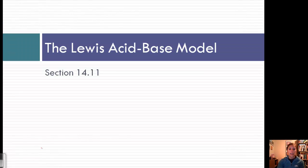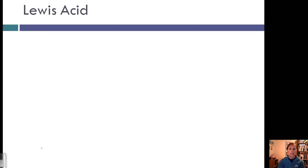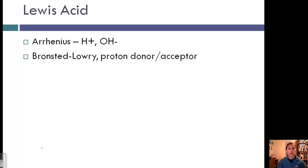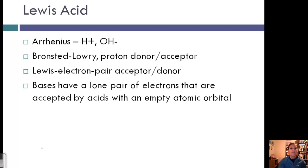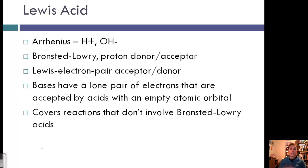We've talked about Arrhenius and Bronsted-Lowry acids and bases. Now let's look at a third type: Lewis acids and bases. These are electron pair acceptors or donors. Bases have a lone pair of electrons that are accepted by acids with empty atomic orbitals. This definition is convenient because it includes Bronsted-Lowry acids and bases, but also covers reactions that don't involve Bronsted-Lowry acids.